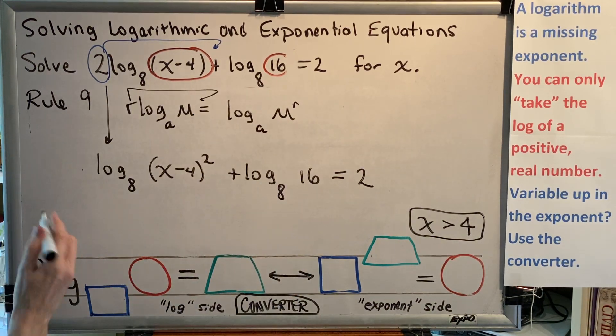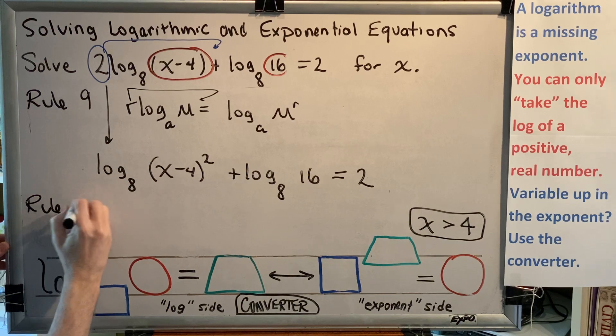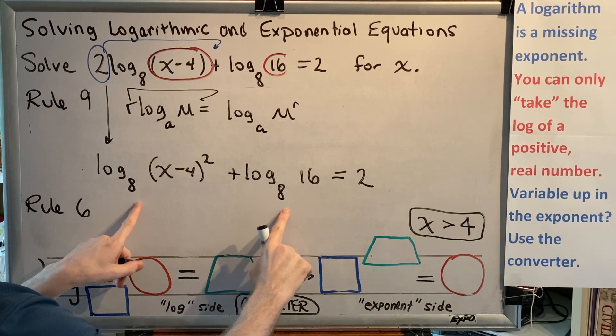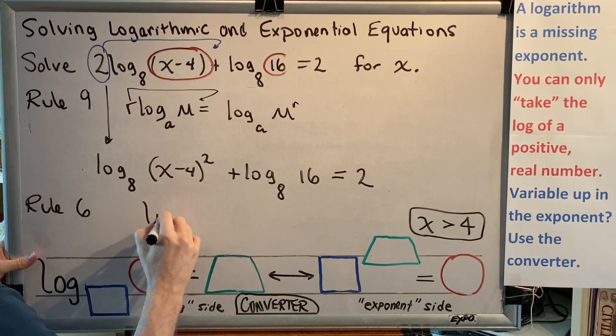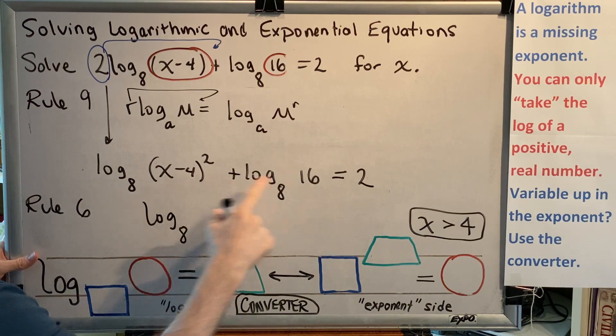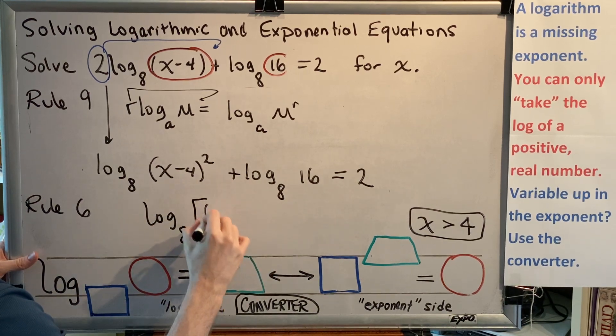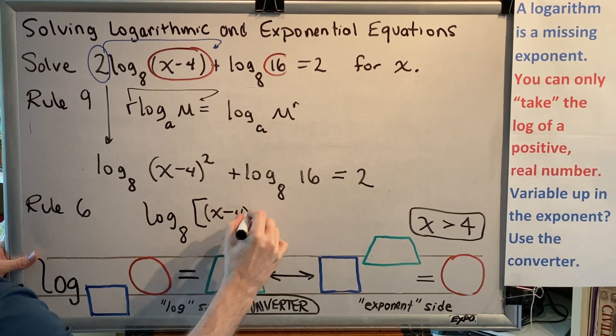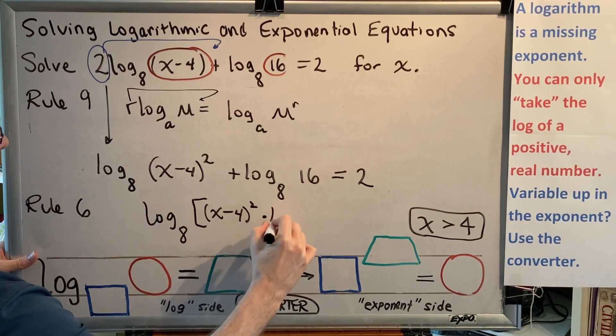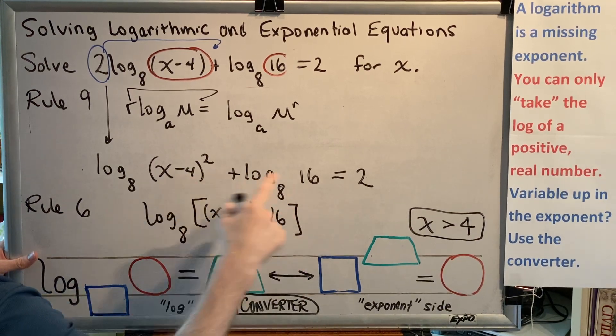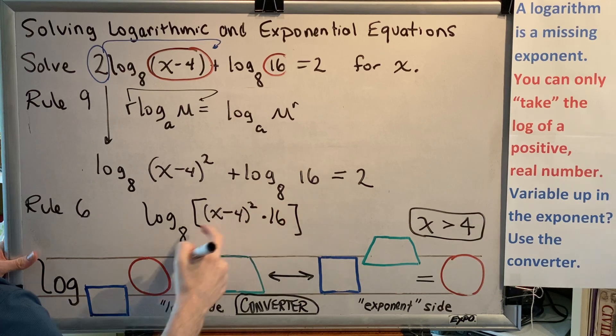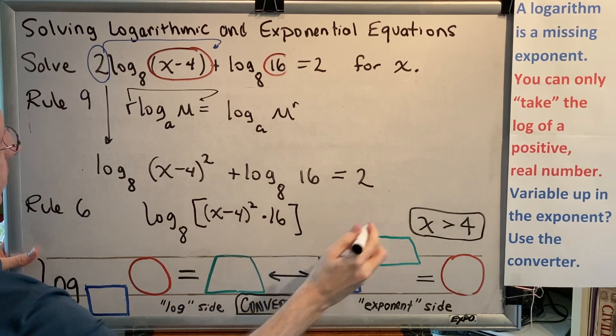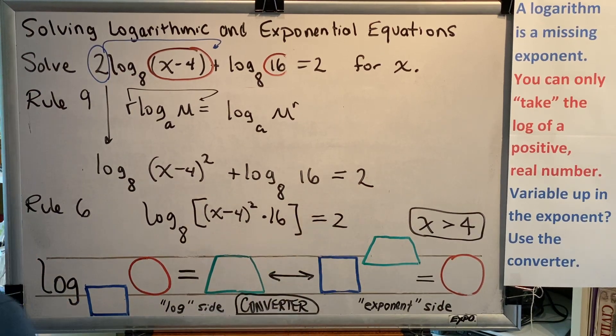Next we're going to use rule 6. Rule 6 says when two logs with the same base are being added, you can combine them into a single log. You just have to multiply the two arguments. So then we'll have (x minus 4) squared, multiplied by the 16. Both of those two arguments combining together to form a new argument. The right hand side, of course, does not change. Equals 2.